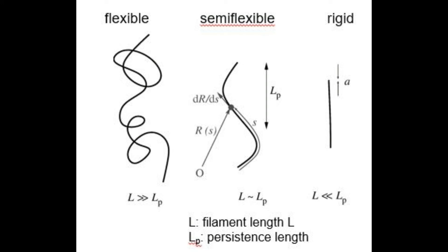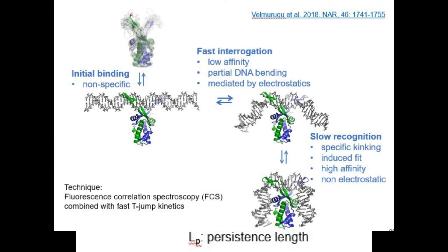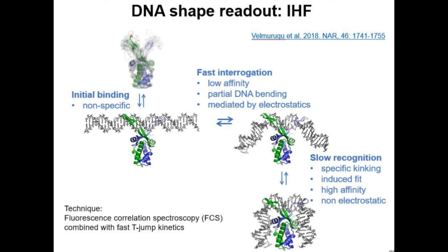This property is taken advantage of by multiple proteins. For example, IHF (integration host factor) does a shape readout for the minor groove and gives two kinks to the DNA. It moves in three distinct steps: first, an initial non-specific binding to the minor groove; then a fast interrogation with low affinity and partial DNA bending to check if the DNA is capable of bending at that position; and finally a slow recognition, where if bending is possible, IHF provides a specific high-affinity kink in that region that is not easily removed.